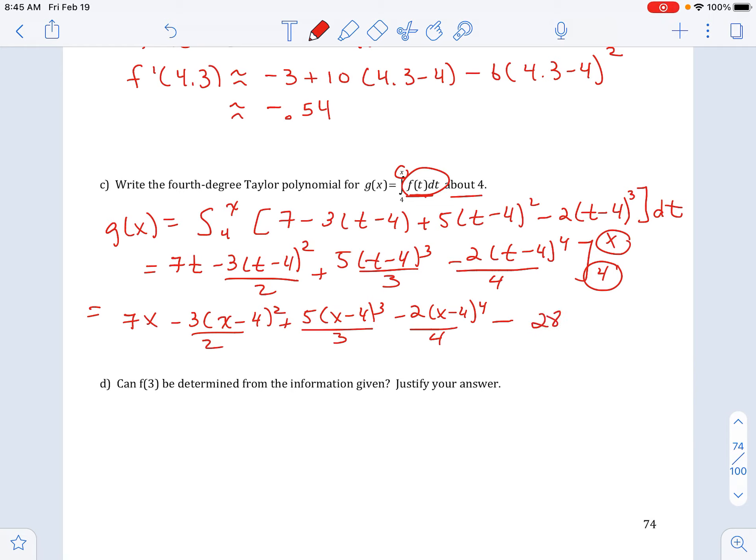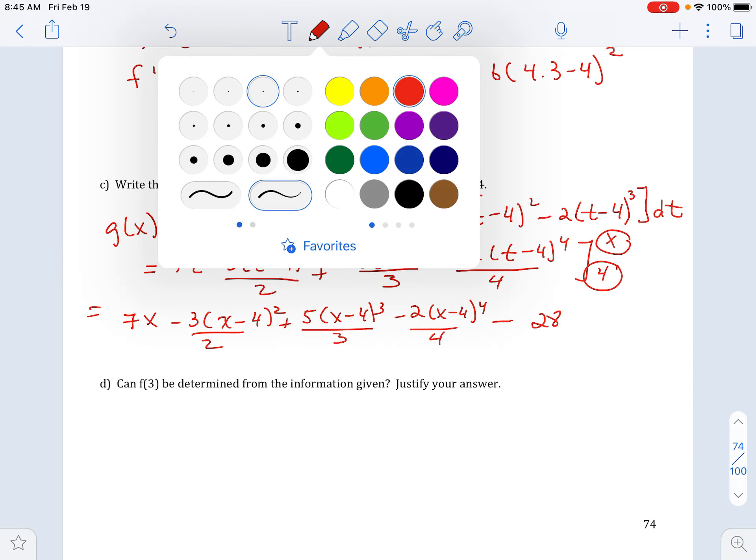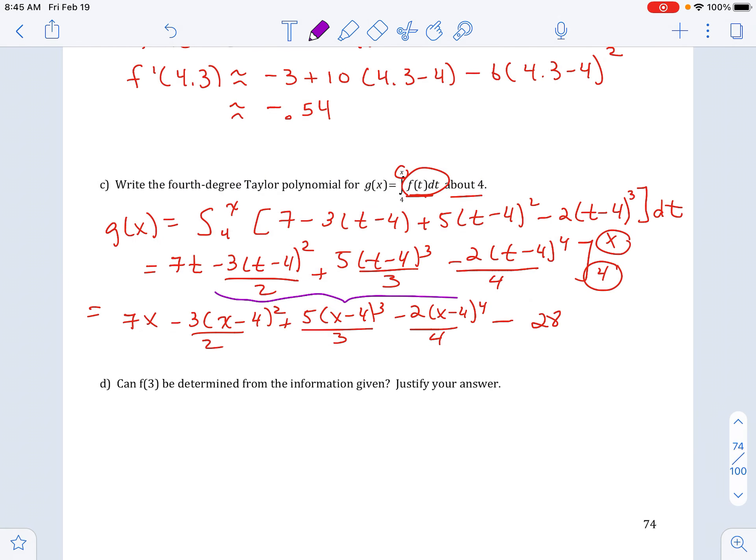And then we're going to subtract off what happens when I plug in the lower bound, which is 4. So my first number is 28. But then notice in all the other terms, all of these have a t minus 4. So when I plug in a 4, all of those end up being 0.